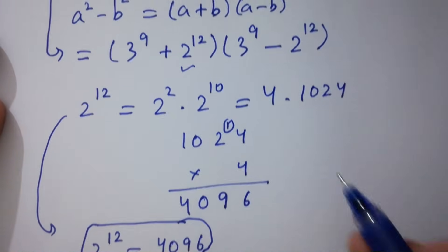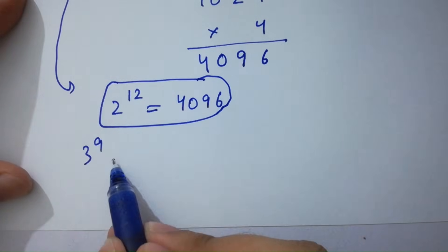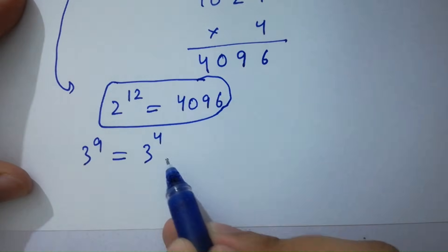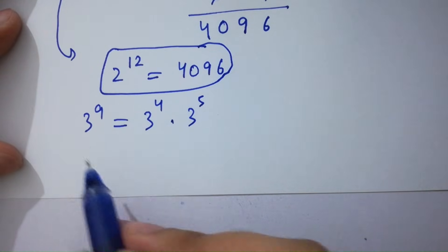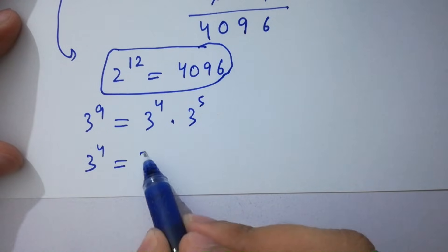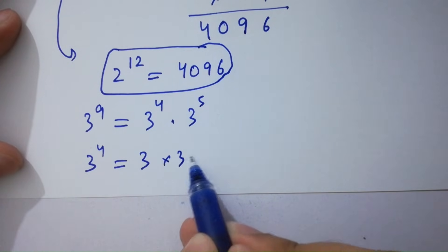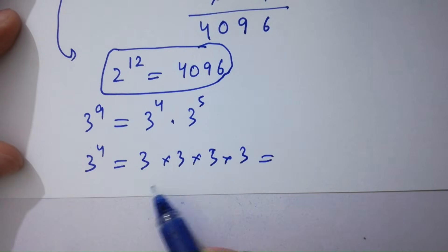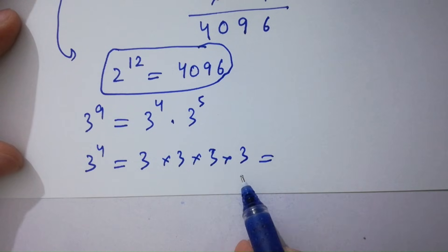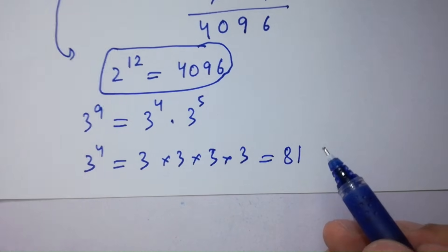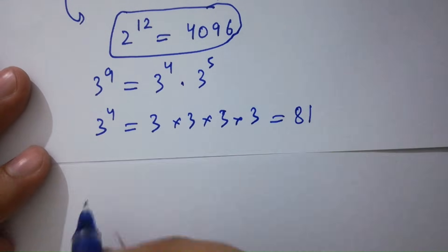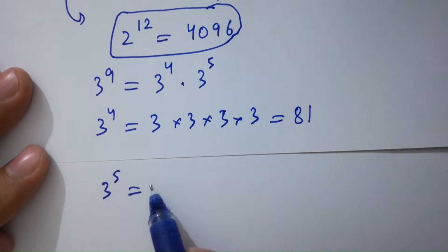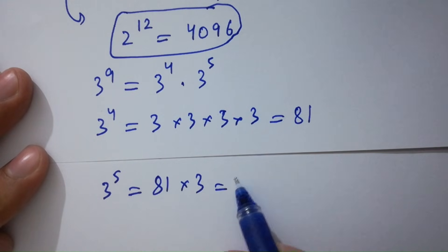Next, we have 3 to the power 9. Simplify this: 3 to the power 9 equals 3 to the power 4 times 3 to the power 5, since 4 plus 5 is 9. And 3 to the power 4 is 3 times 3 is 9, 9 times 3 is 27, 27 times 3 is 81. Then 3 to the power 5 equals 81 times 3, which is 243.